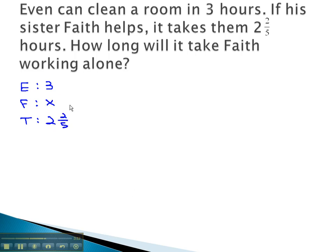We don't know how long it would take Faith alone. And also, we've got the problem that the teamwork time is a mixed number. So let's change this to an improper fraction, which would be 12/5, by multiplying 5 times 2 and adding the 2.